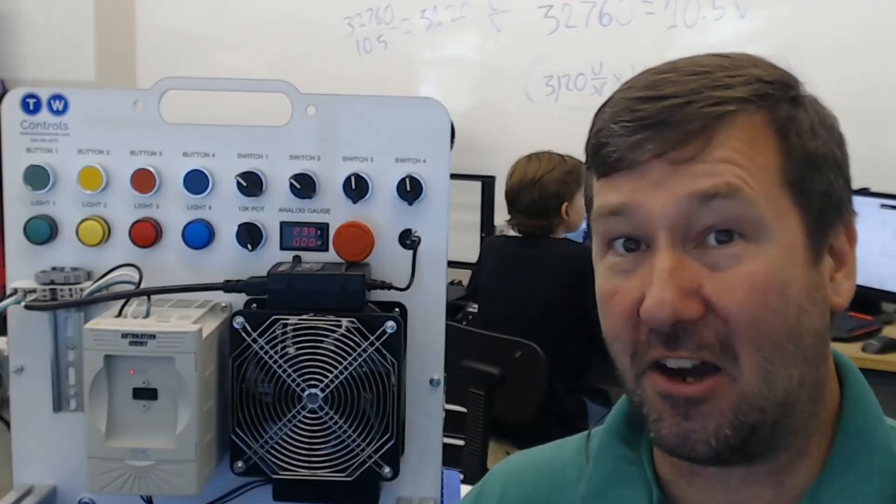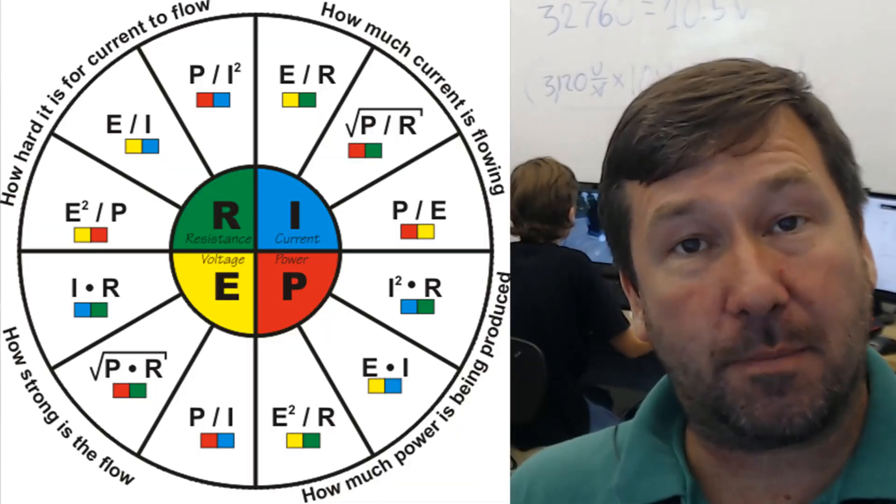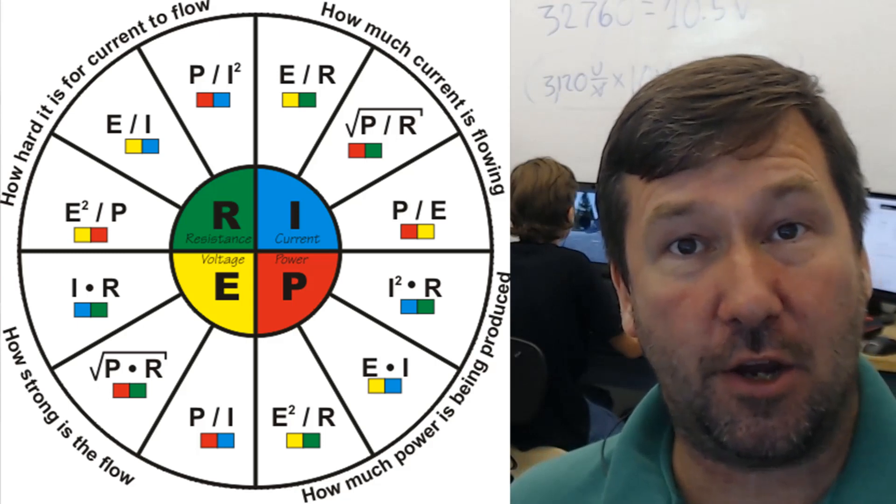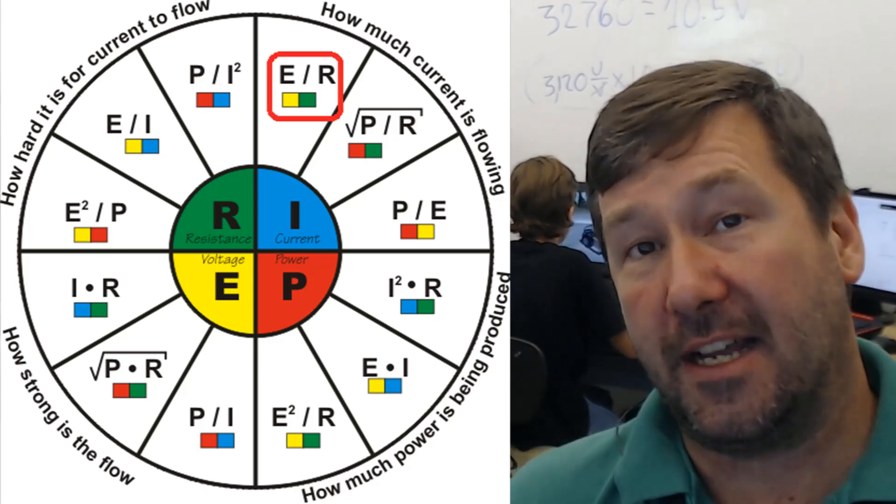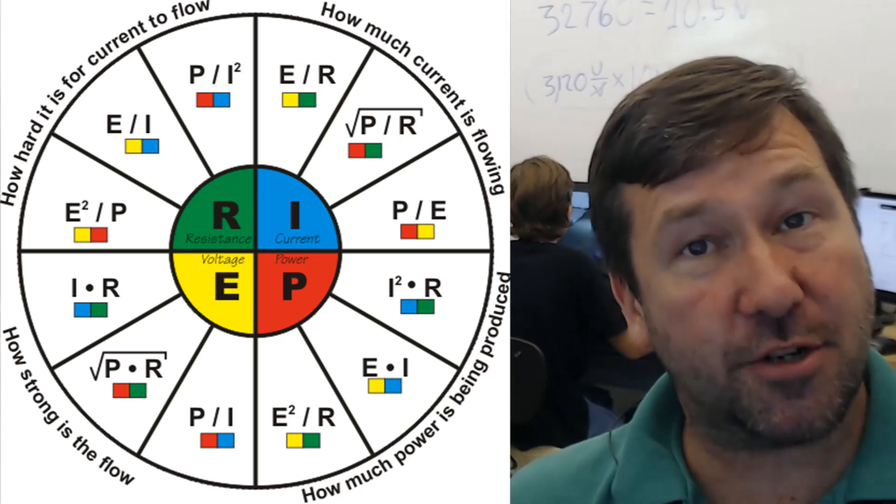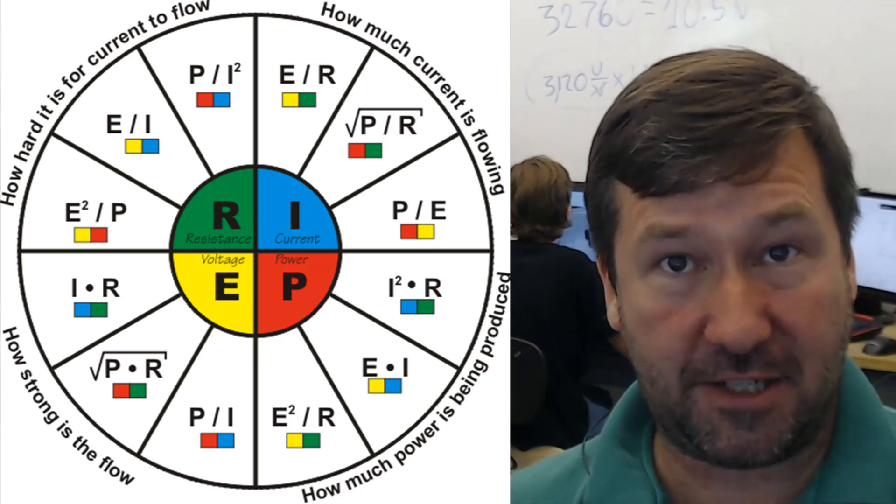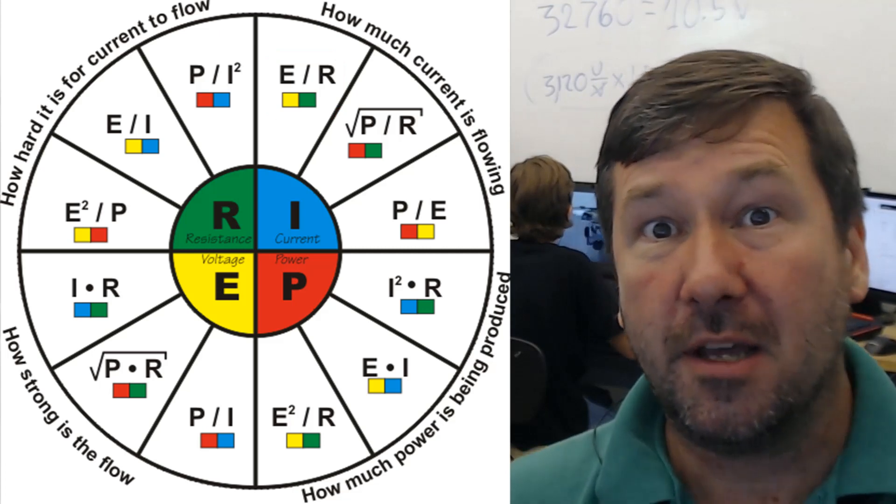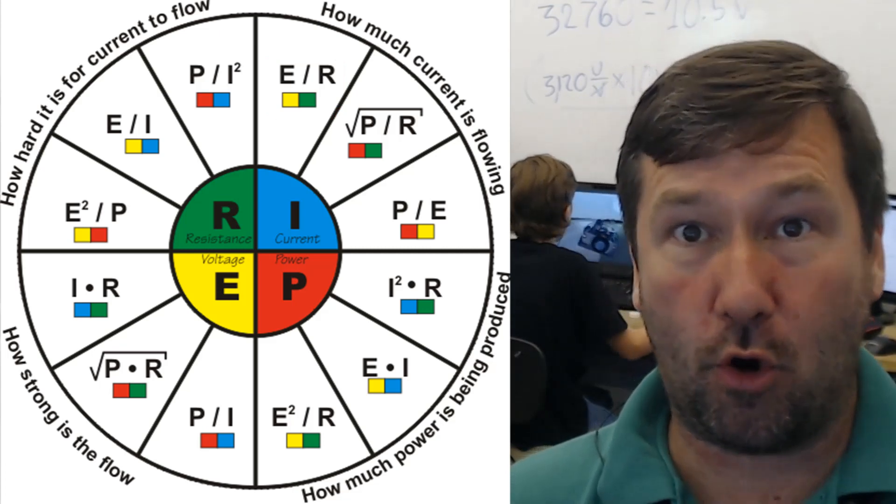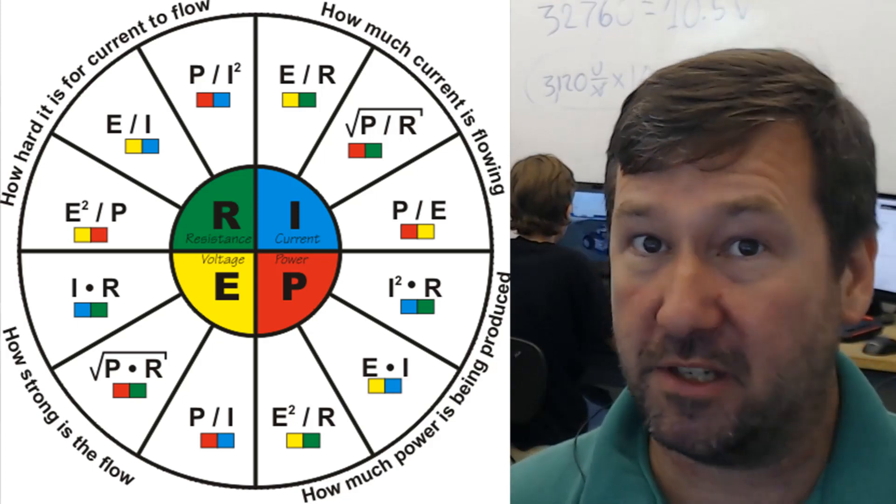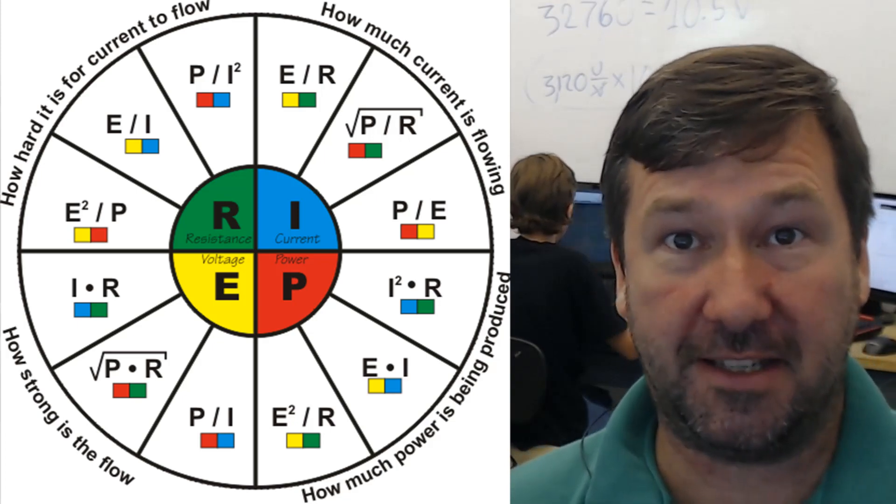Now for the long answer. Using the ohms law pie chart, which I'll link below, we can determine the current of our circuit by taking our voltage and dividing it by our resistance. Now make sure you bookmark this ohms law pie chart that I'm putting in the description, because even if you're thinking I'm not that interested in analog or I'm just going to be programming PLCs, trust me, eventually you're going to need this.